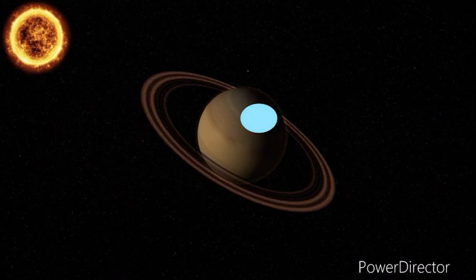This storm on Saturn can almost be as large as the Earth. That's 6,200 miles wide. It's incredible.